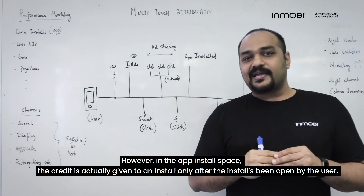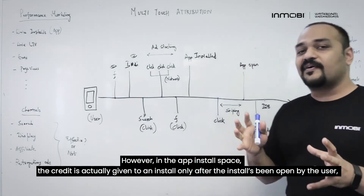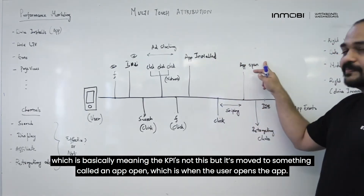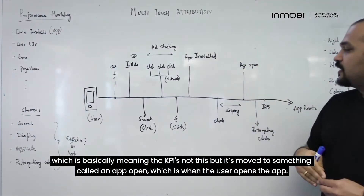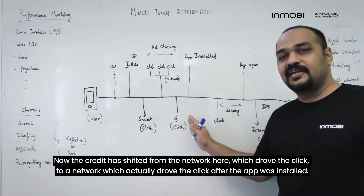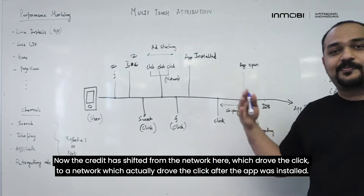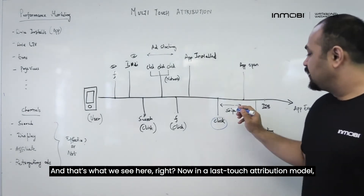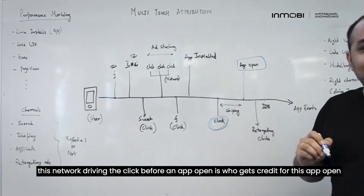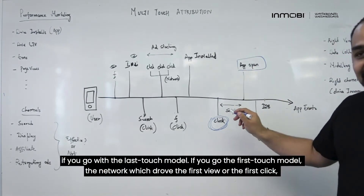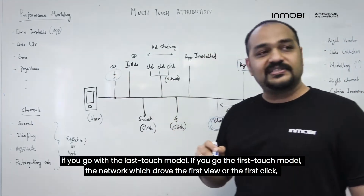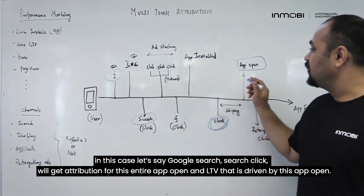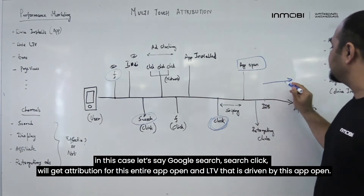In the app install space, credit is actually given to an install only after the install has been opened by the user — meaning the KPI has moved to something called an app open. The credit has shifted from the network that drove the click to the network which drove the click after the app was installed. In a last-touch attribution model, the network driving the click before an app open gets credit. In a first-touch model, the network that drove the first view or first click — let's say a Google search click — gets attribution for this entire app open and the LTV driven by it.